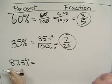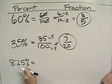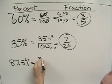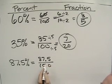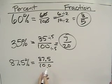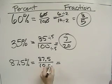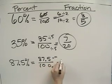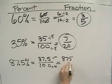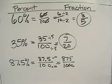And this one's a little bit on the tricky side. 87.5% means 87.5 over 100. But now we have this decimal inside of a fraction, so we've got to get rid of that decimal. So we're going to multiply this by 10, multiply this by 10, we get 875 over 1000.